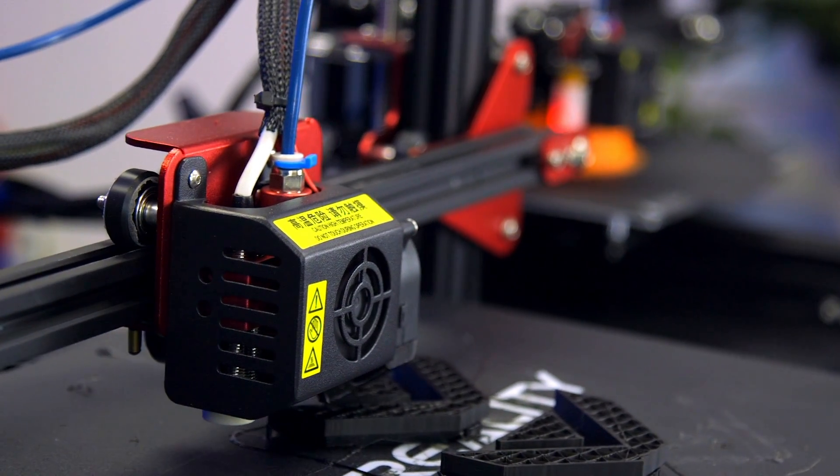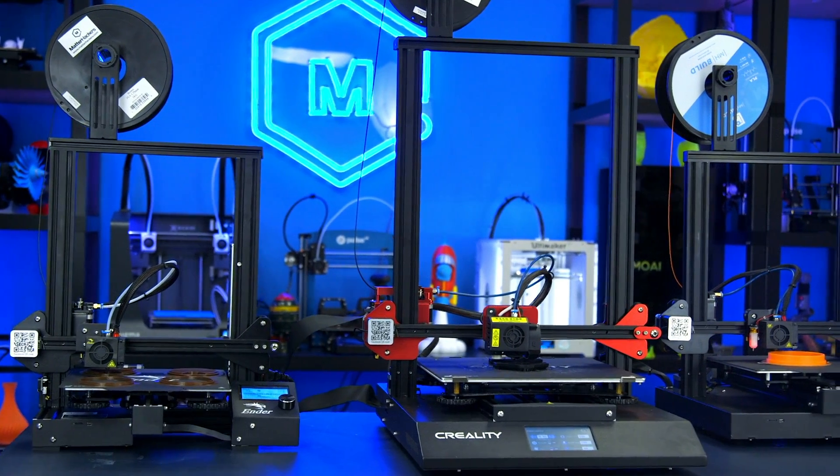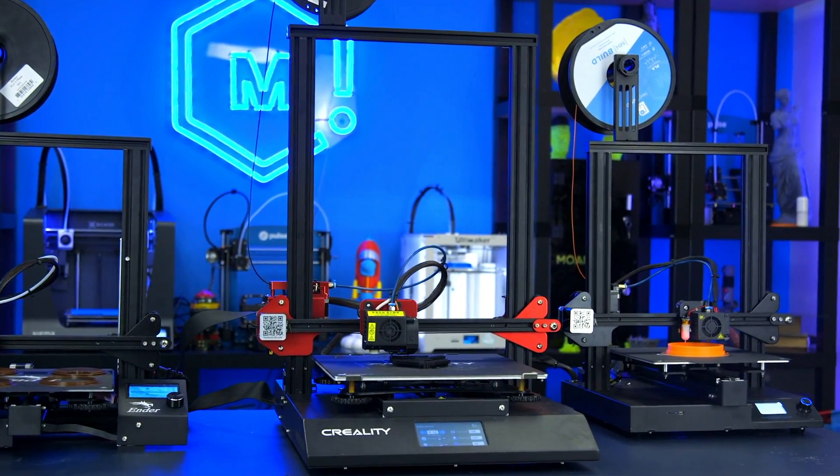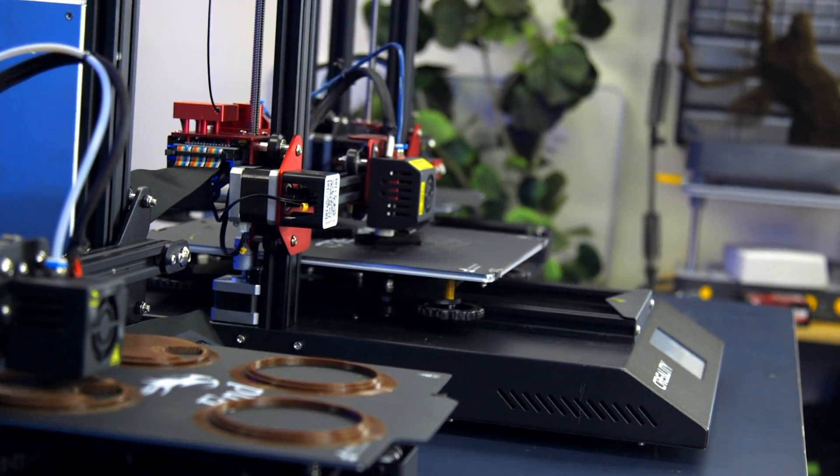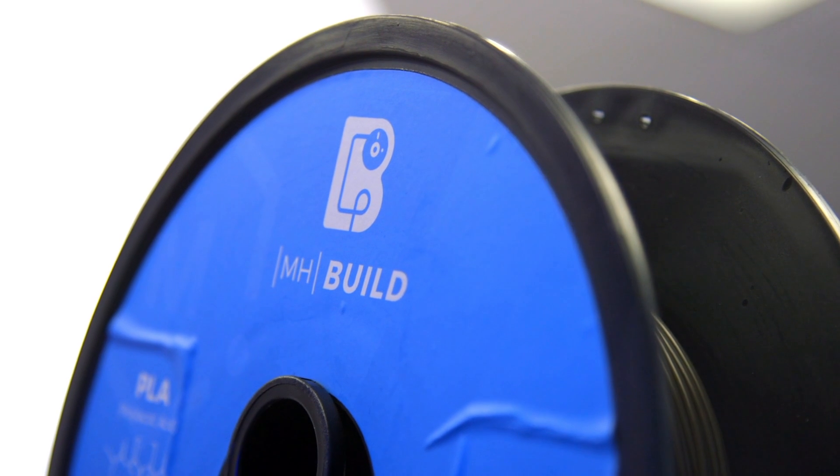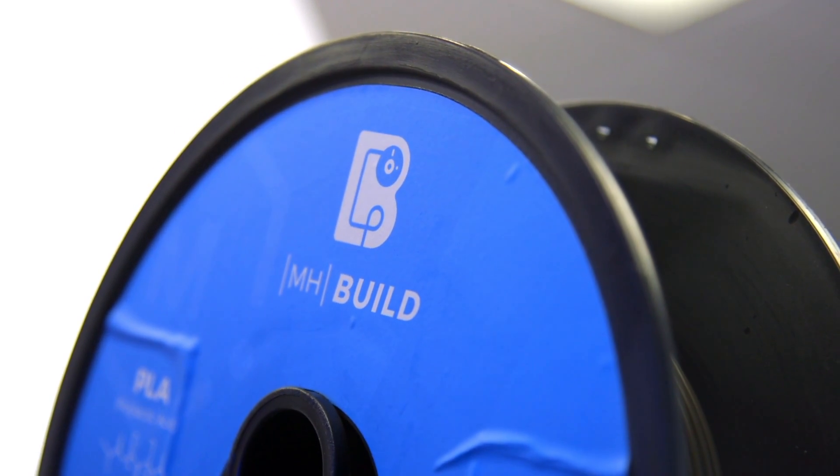This project was made possible using some of Creality's latest 3D printers: the CR-10S Pro, the CR-20 Pro, and the Ender 3 Pro—three really reliable and really affordable machines that can really get your foot in the door with 3D printing or help beef up your print farm and get a lot more machines running at once. This project was also made possible using MHBuild, a really reliable and affordable material that has a lot of different color options. Now let's get designing.